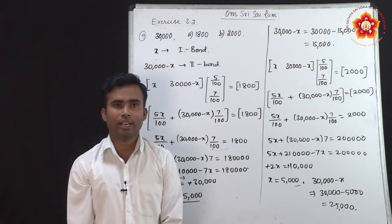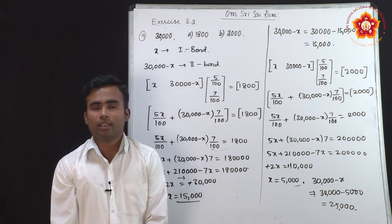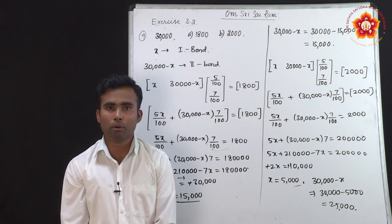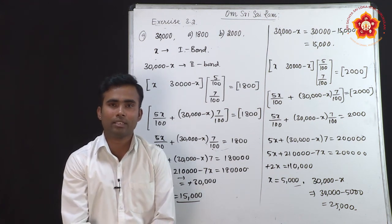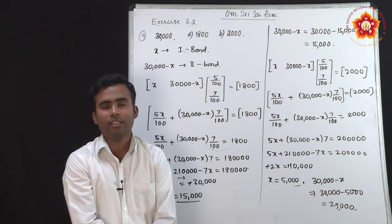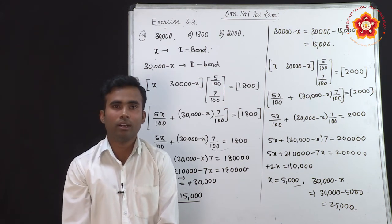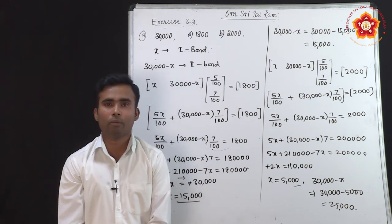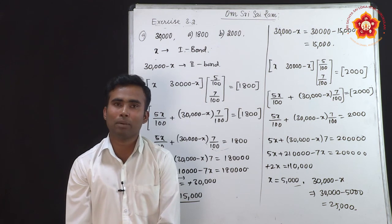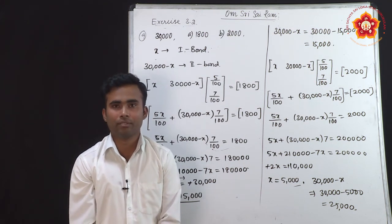We have now completed addition of matrices, multiplication of matrices, and different properties regarding these two algebraic operations. The problems look easy, but a single wrong element in multiplication makes the entire solution wrong. This is a very easy scoring chapter — you can score 5 to 6 marks. Practice more multiplication problems. In the next session, we will talk about the transpose of a matrix.